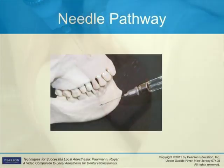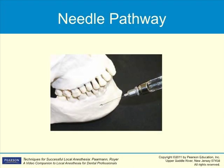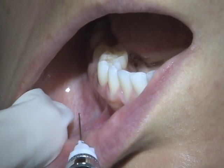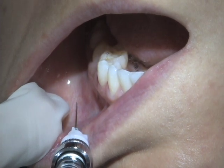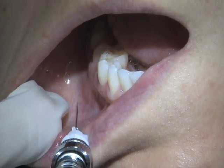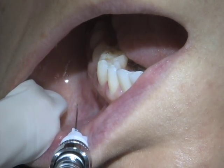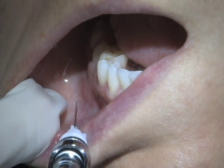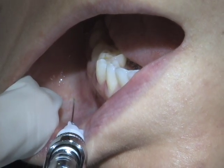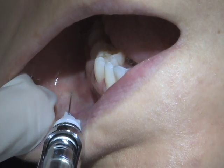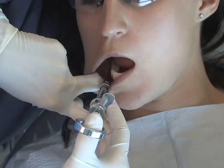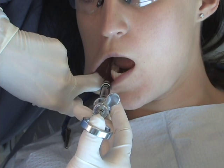Method two: the clinician is positioned in front of the patient. Retract the lip and keep the syringe as parallel as possible with the occlusal plane. Insert the needle at the depth of the vestibule approximately four to six millimeters, so the needle will be directly over the foramen when the anesthetic is deposited. Aspirate and deposit solution.